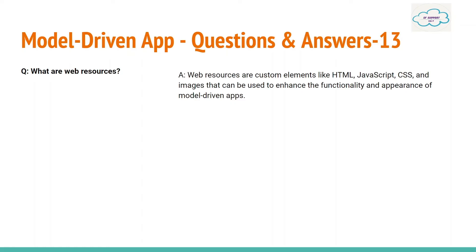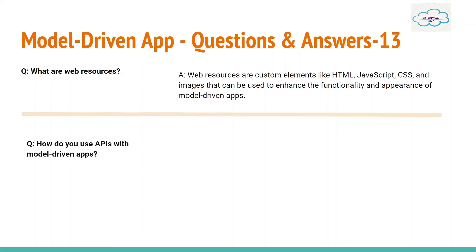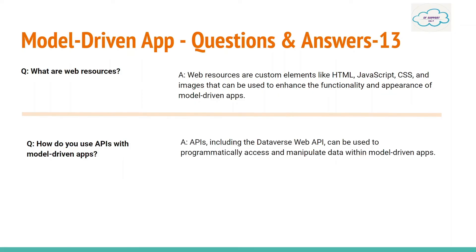Next question: What are web resources? Web resources are custom elements like HTML, JavaScript, CSS, and images that can be used to enhance the functionality of the model-driven app. APIs, including the Dataverse Web API, can be used to programmatically access and manipulate data within the model-driven app.